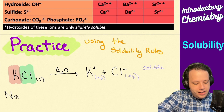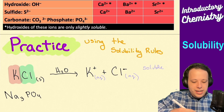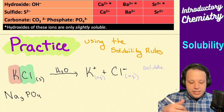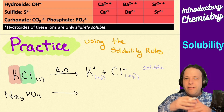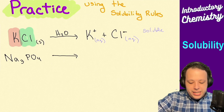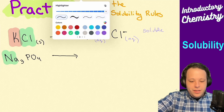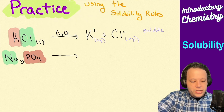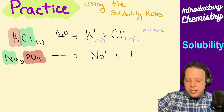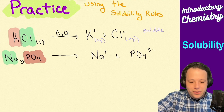What if I have Na3PO4? How would this one break apart? The whole idea is that all the ions get fully surrounded by water. When it breaks down, we get sodium as one ion and PO4 as the other — giving us Na+ and PO4 3-.